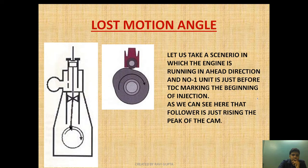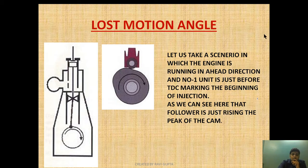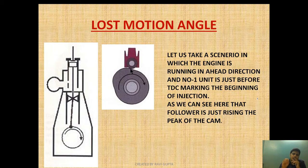In this diagram, the engine is moving just above TDC in the ahead direction. Just above TDC, the cam is about to reach its peak — meaning the beginning of injection is about to happen. The follower is just rising to the peak of the cam. This is the scenario when the engine is running in the ahead direction with unit number one just before the TDC, marking the beginning of injection.